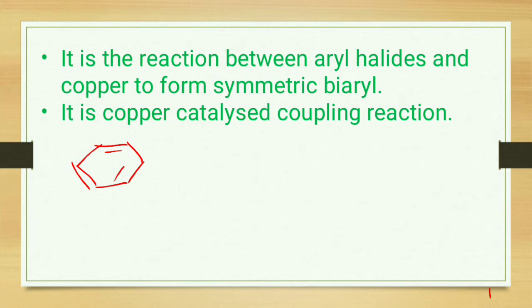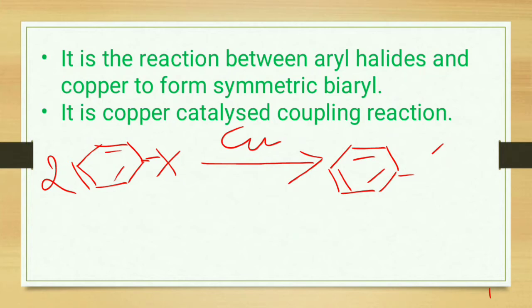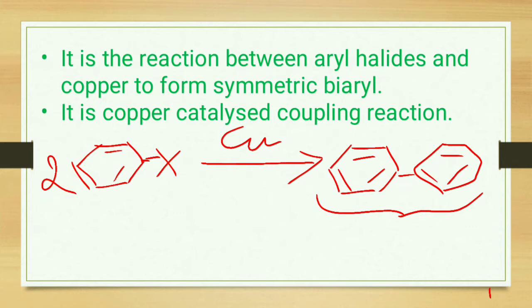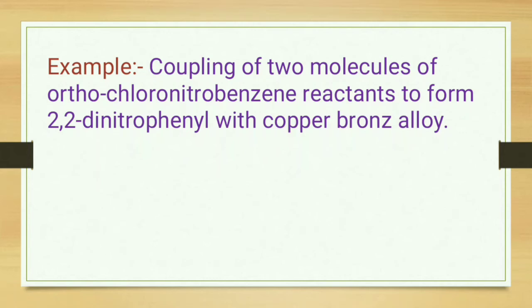This is our halide group, and this is a copper-catalyzed reaction. What will be formed is a symmetric biaryl. It is known as symmetric biaryl because a plane of symmetry is present in this molecule — if we cut this molecule at the center, it divides into two equal halves.